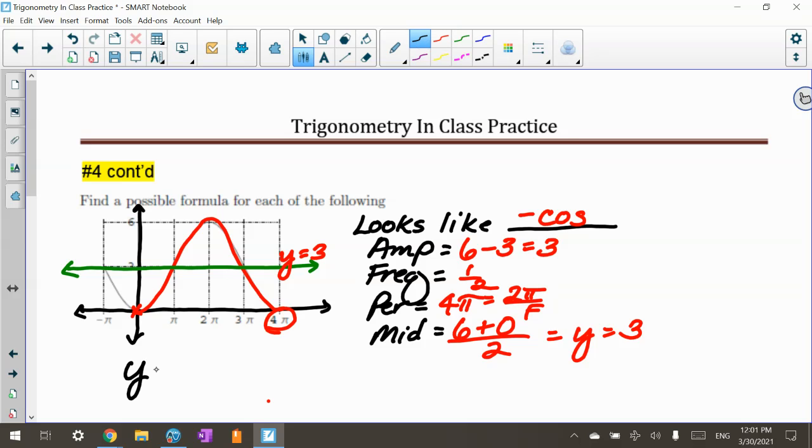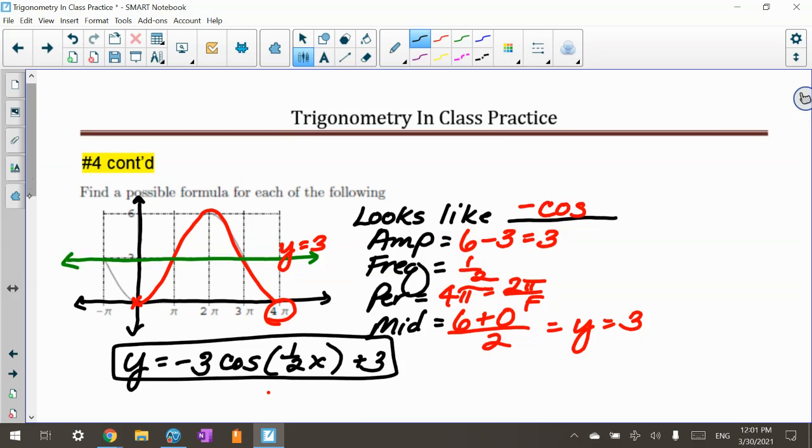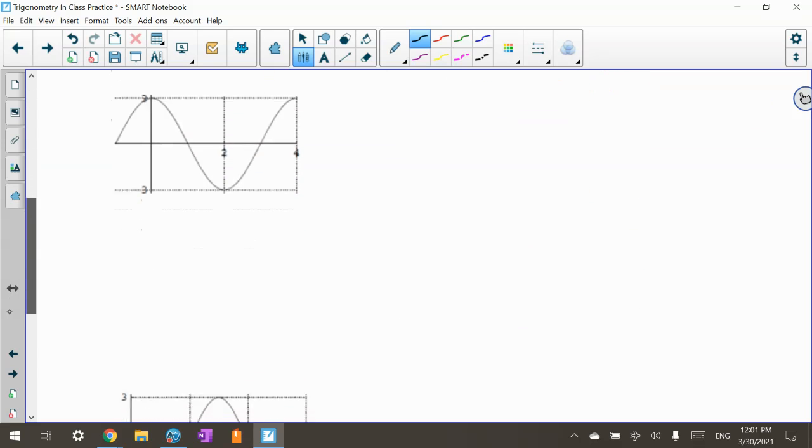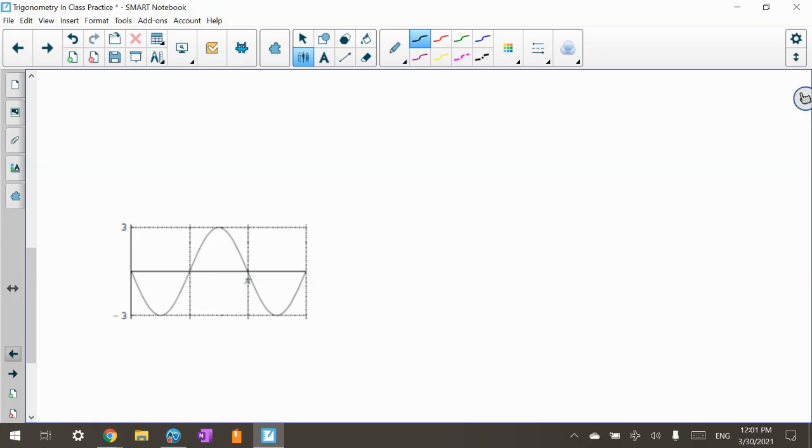So my equation is y equals negative 3 cosine, my frequency is 1 half x plus 3. Another fun thing to do, okay? So there's other ones here in your packet if you want to practice them. I'm not going to do all of them, but there's some here for you to look at to see if you want to come up with the equation, and then you can check with me.